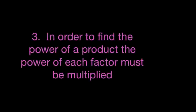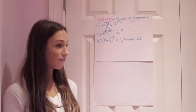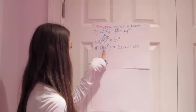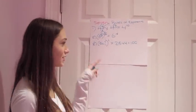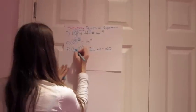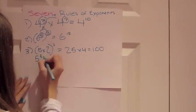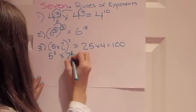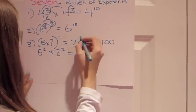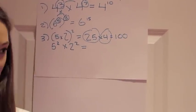The third rule is that in order to find the power of a product, the power of each factor must be multiplied. For example, when trying to solve 5 times 2 to the second power, you would multiply 5 to the second times 2 to the second. And so that equals 25 times 4, which equals 100.